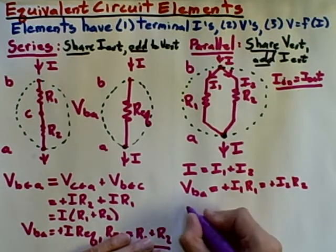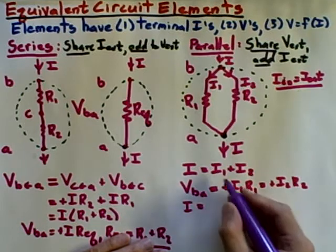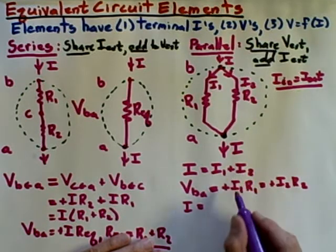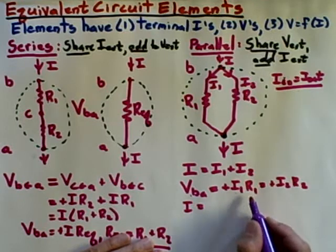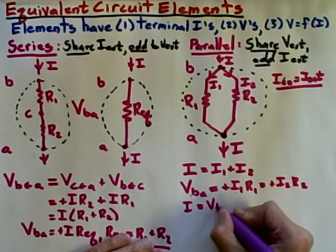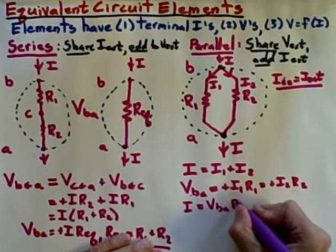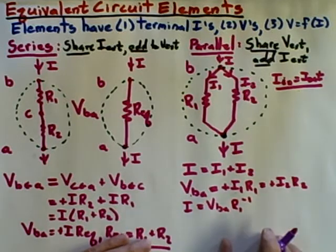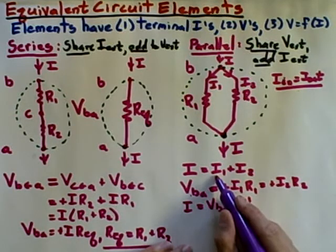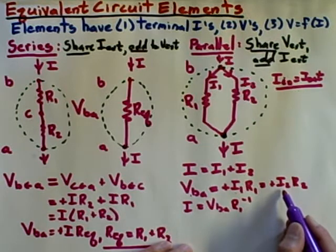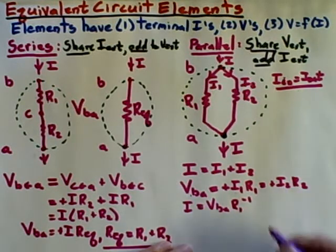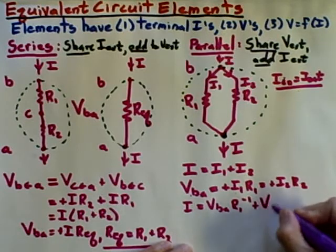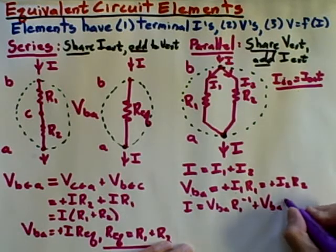Solving now for I, it's I1 plus I2. I1 is VBA divided by R1. So that would be VBA times R1 inverse. That's I1. For I2, a similar story, I can solve here I2 is VBA over R2 or plus VBA times R2 inverse.